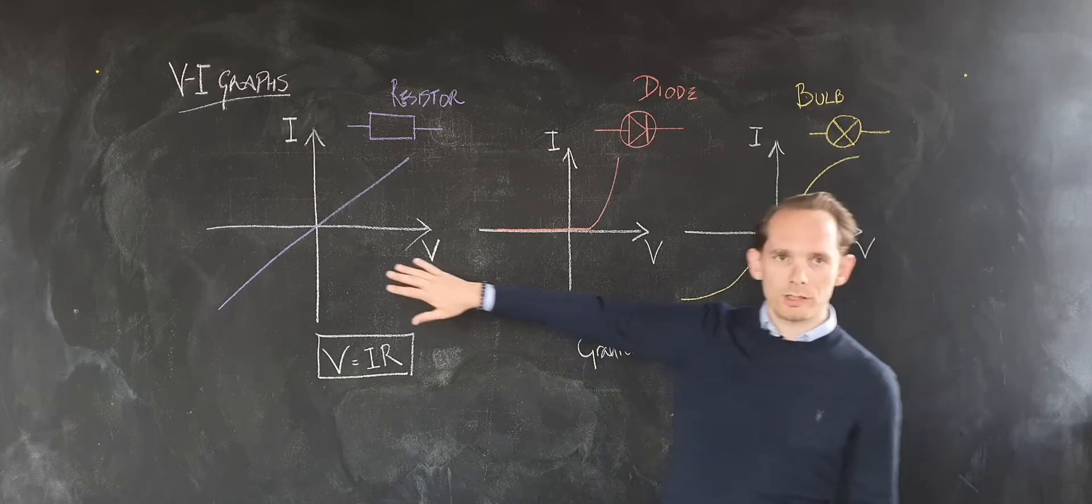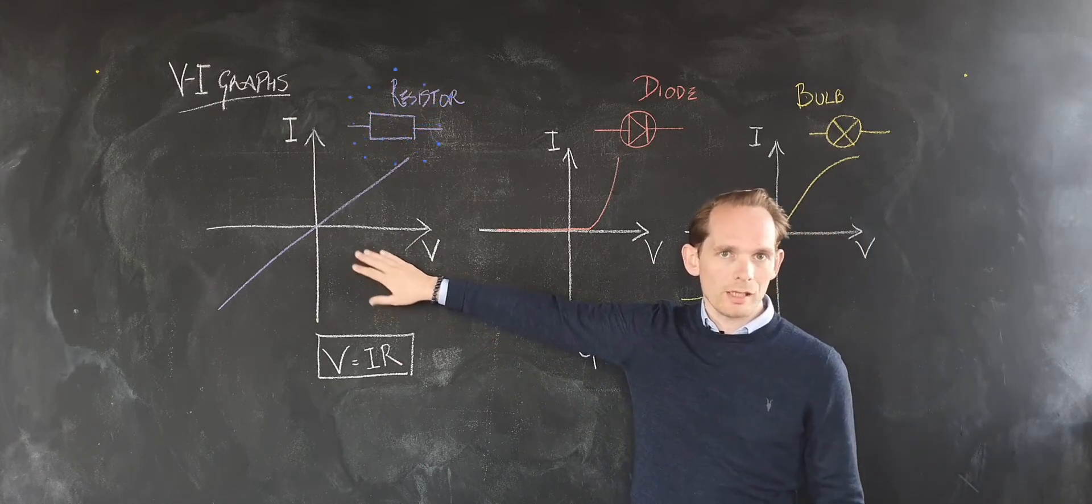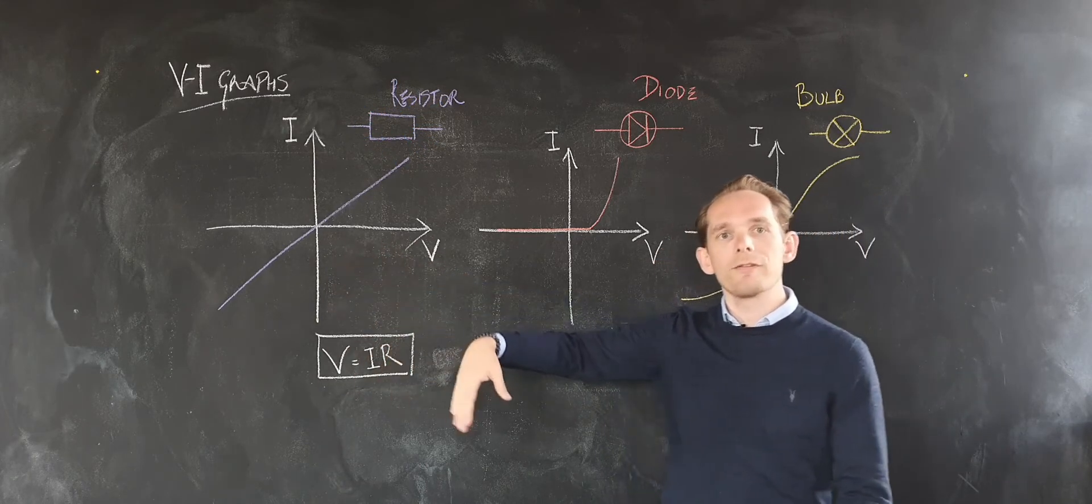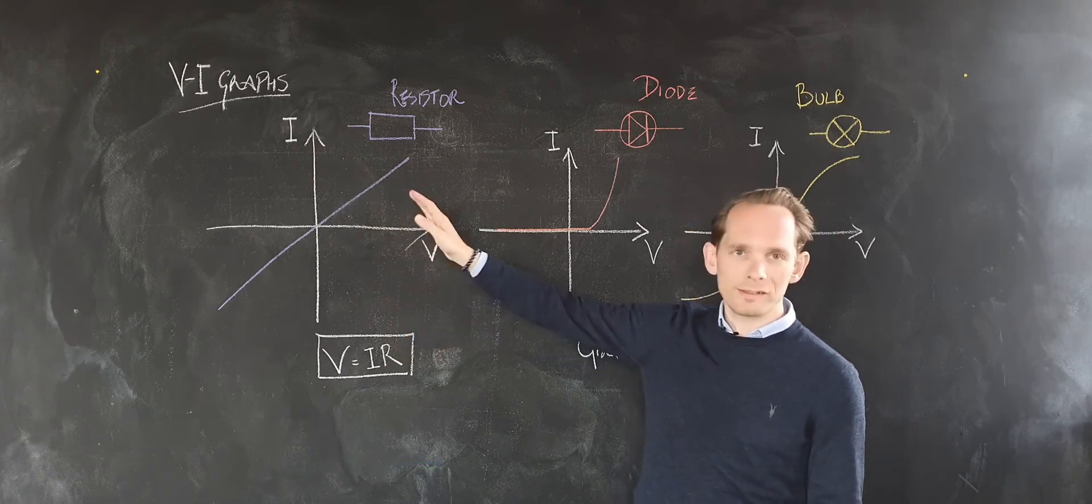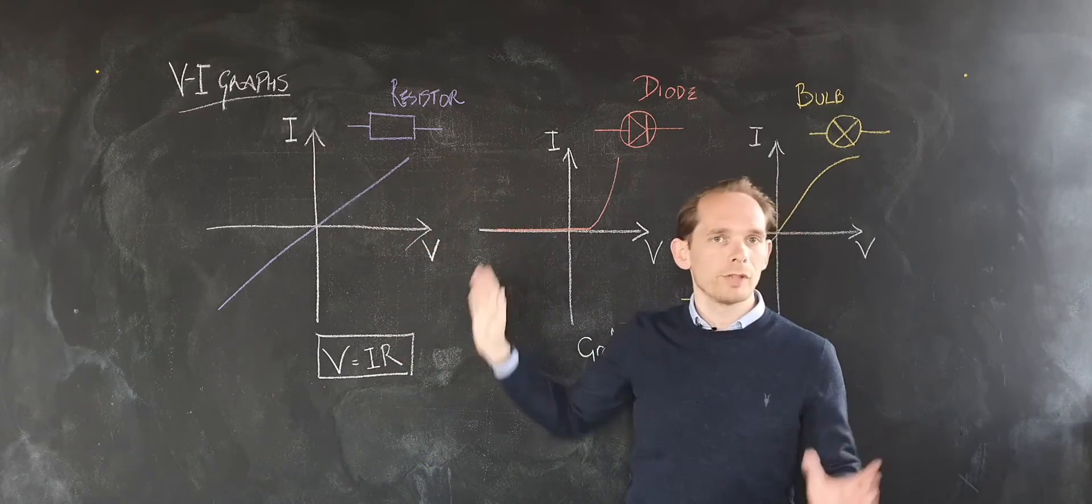So bearing that in mind, let's first look at the simple version, the resistor. It's an ohmic conductor, that means if you double the voltage, you double the current through it. The resistance doesn't change, you get a straight line. Nice and straightforward.